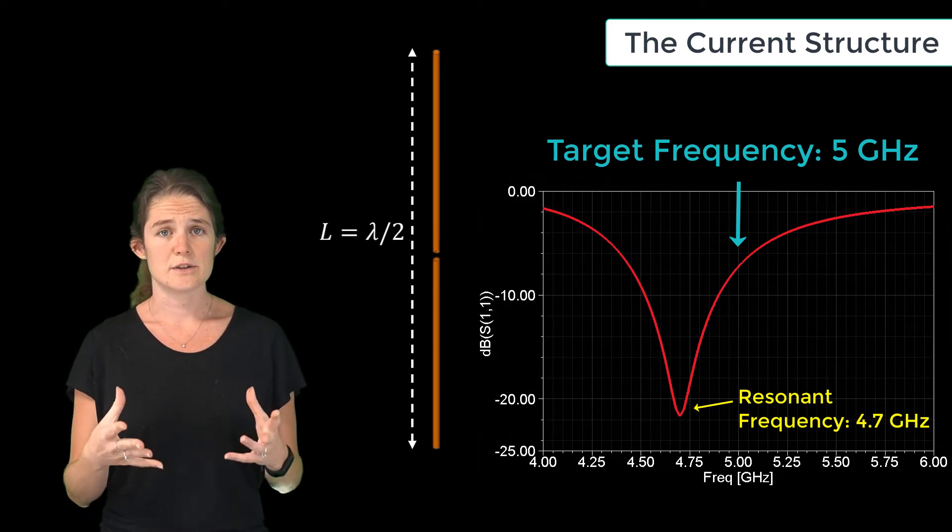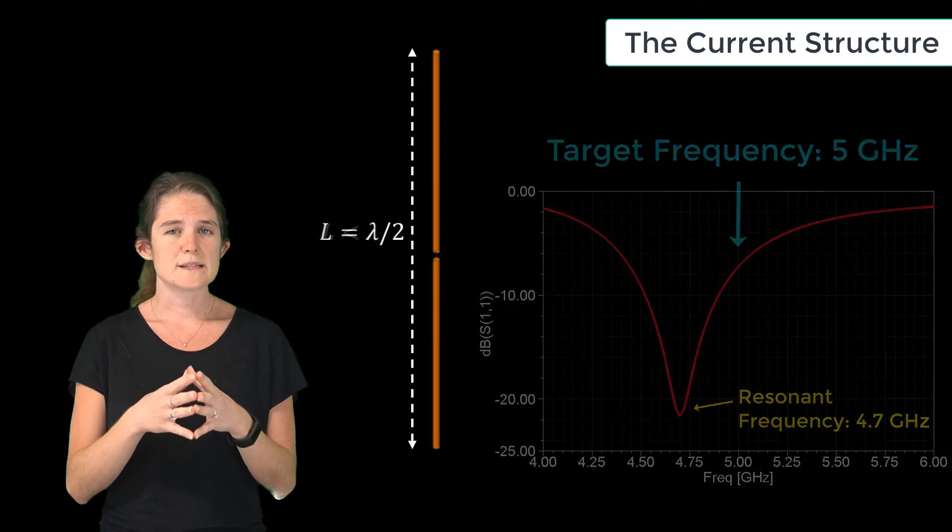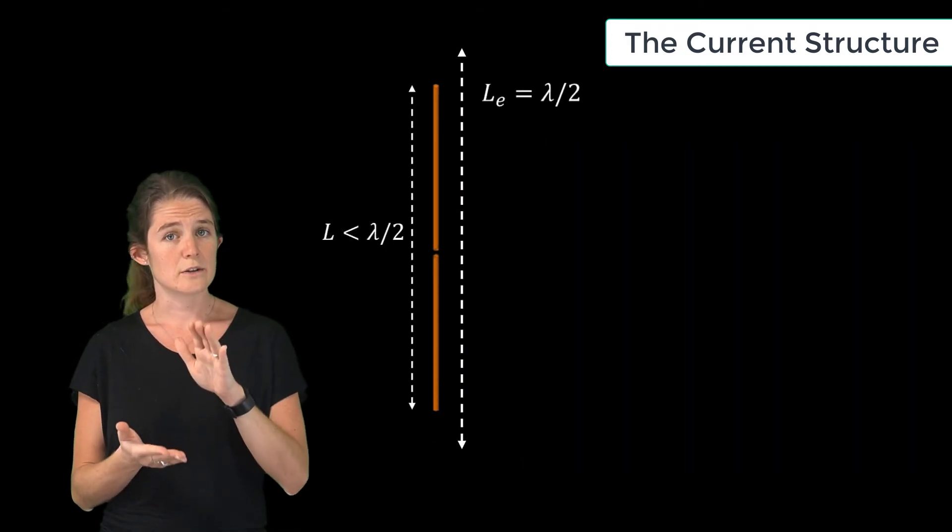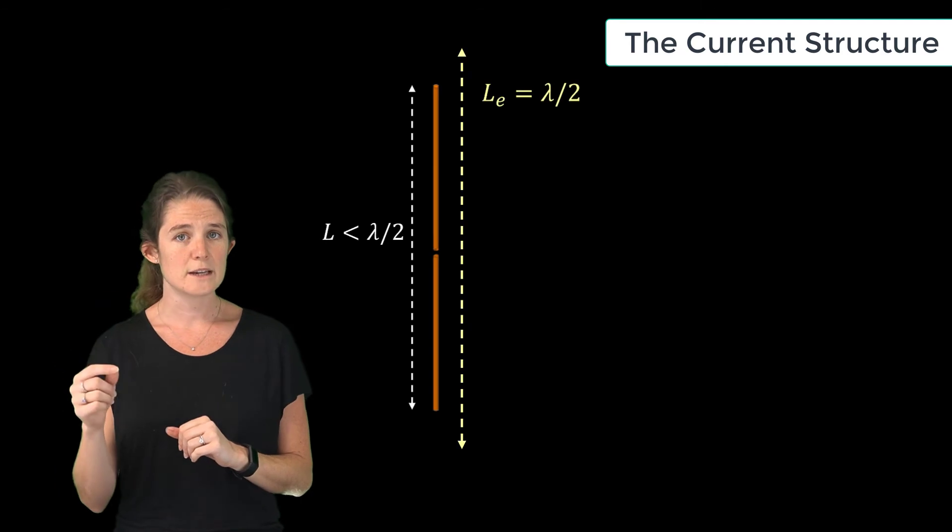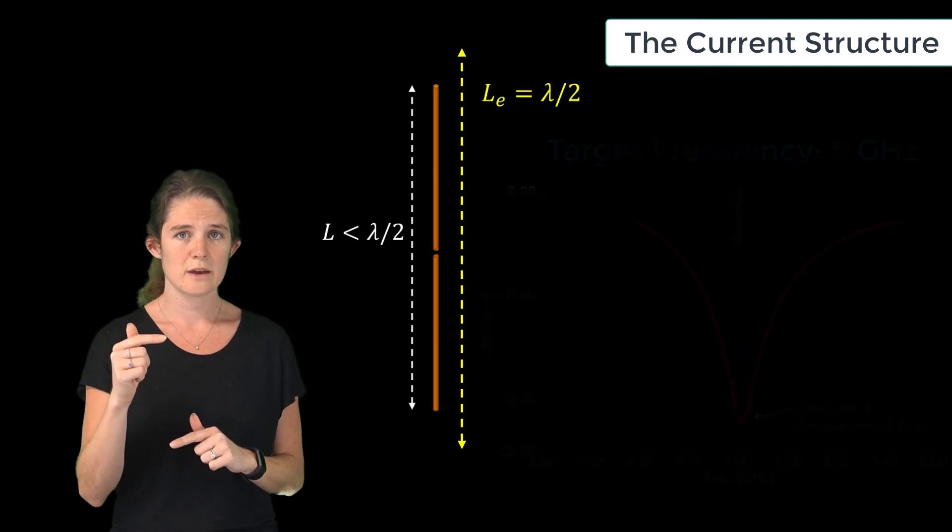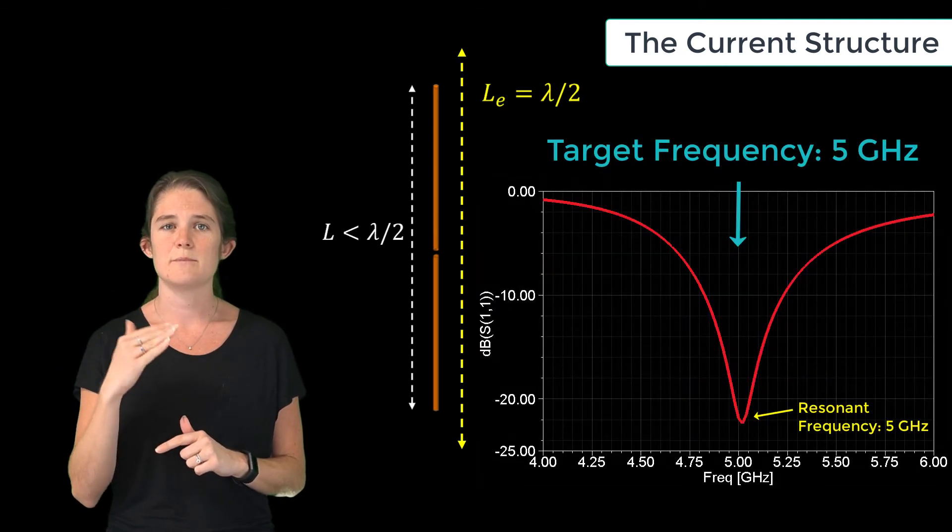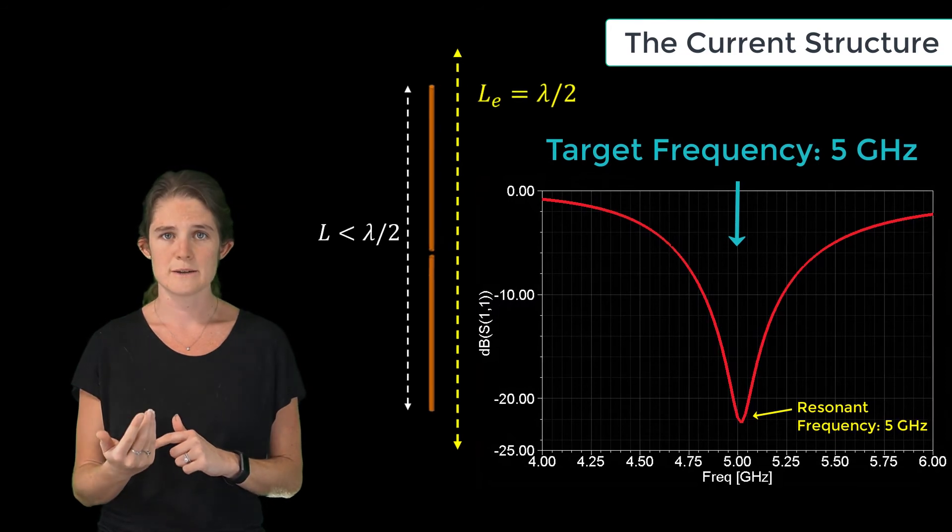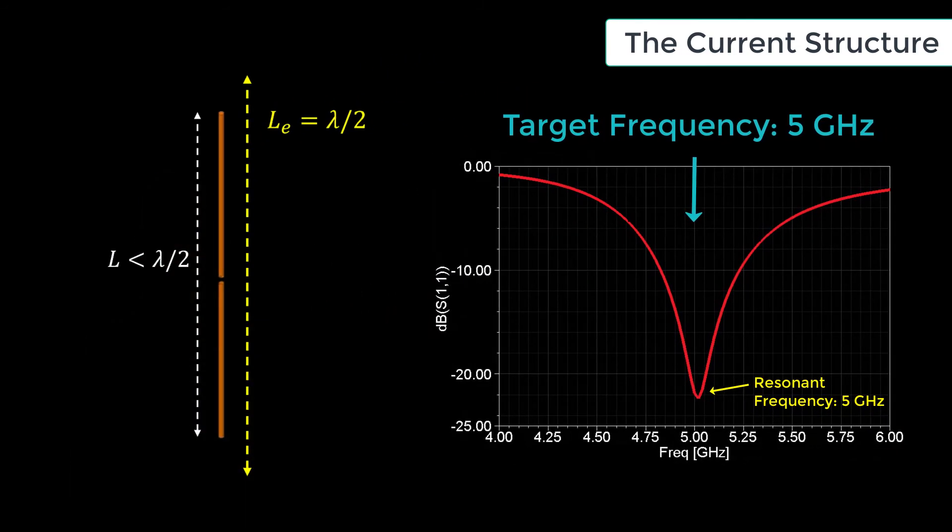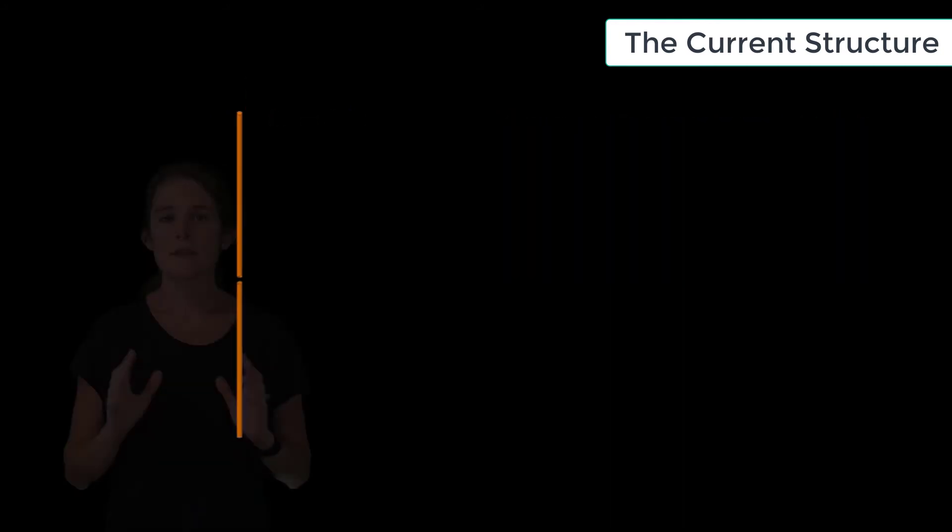So the next step is to optimize your antenna in simulation by slightly shortening its physical length. The purpose here is to make the effective length equal to half wavelength, which will shift your resonant frequency back to your target design frequency.